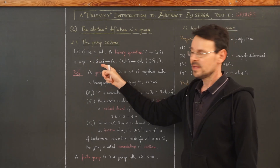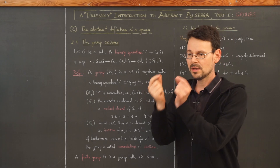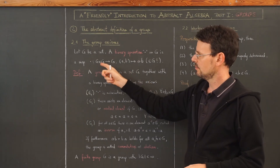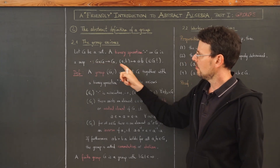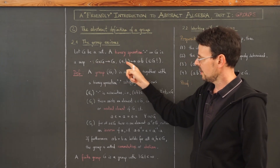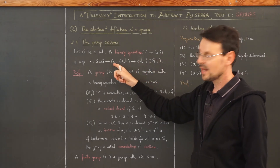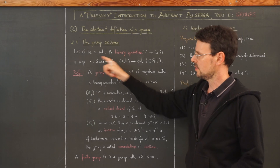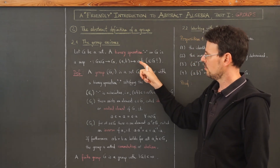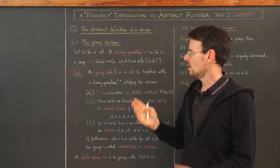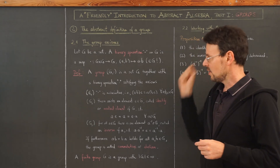If you've never seen that before, no problem. This simply means you take two elements a and b of this set — a tuple — and this map must combine these two elements to give you a new element, again of this set. This is important: we land in this set again, and this element is denoted by a·b, or a composed with b.